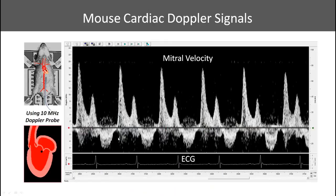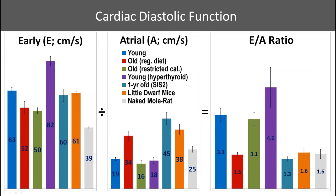Moving to the mitral signal, we orient the probe to capture mainly the mitral flow signal. You can see nice early flow and then the atrial peak, along with the timing of the P waveform. We also get a little bit of the aortic flow, which is useful because it gives us a way to measure the timing of isovolumic contraction and relaxation times — used in the Tei index, another parameter for determining cardiac function. The focus is on early flow (E) and atrial flow (A) individually, shown across several strains of mice.